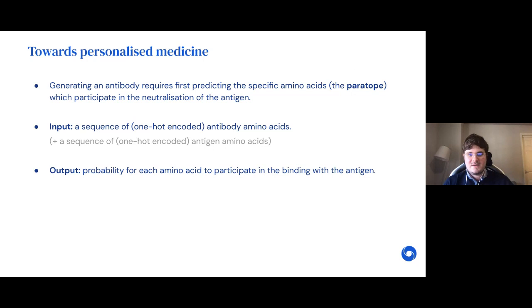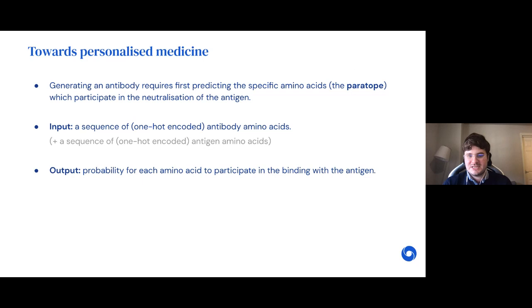Before thinking about generating antibodies you should first understand what's going on with the binding. We set out to predict the specific parts of the antibody — called the paritope — which amino acids actually participate in the neutralization of the antigen. Our input is a sequence of one-hot encoded antibody residues (I'll use residues and amino acids interchangeably), and potentially also the antigen information, since the antigen itself may be a protein. The output is the probability for each amino acid to participate in binding with the antigen.